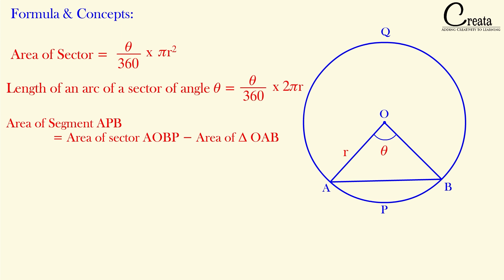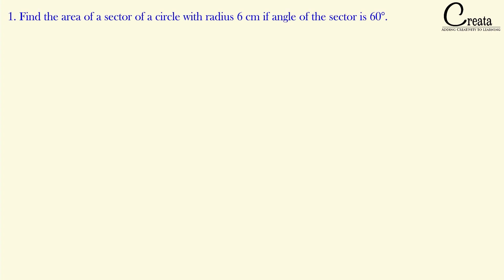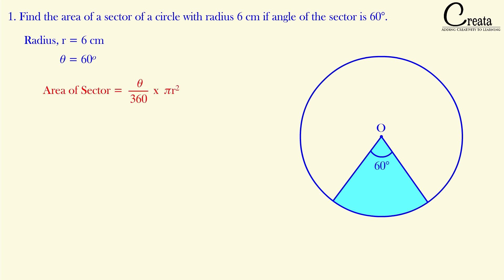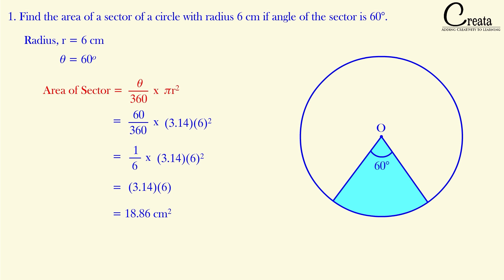Let's move to the first question of exercise 11.1. Find the area of a sector of a circle with radius 6 cm if the angle of the sector is 60 degrees. We are having a circle of radius 6 cm and we have to find the area of the sector whose angle is 60 degrees. Using the formula (theta / 360°) × π r², with theta = 60° and r = 6 cm, on solving we got our answer as 18.86 cm².